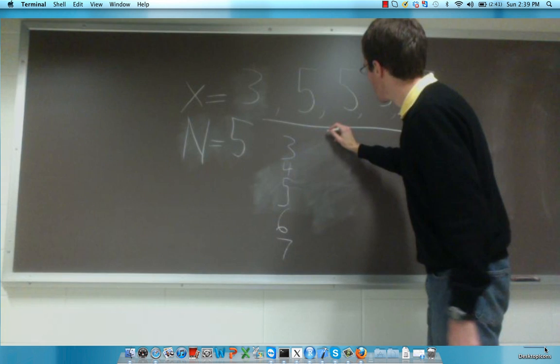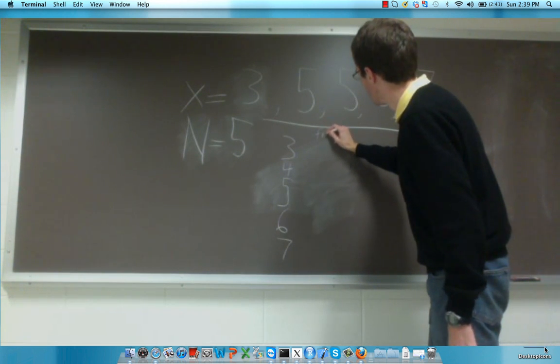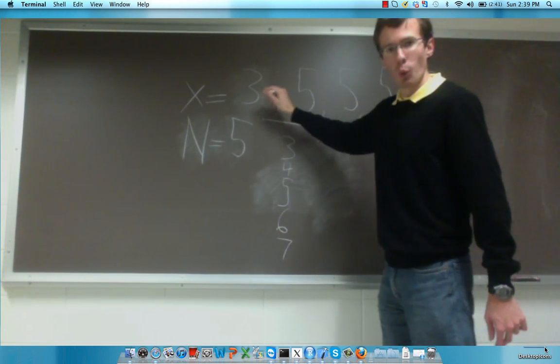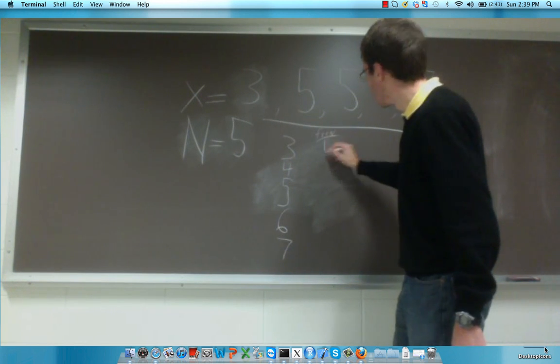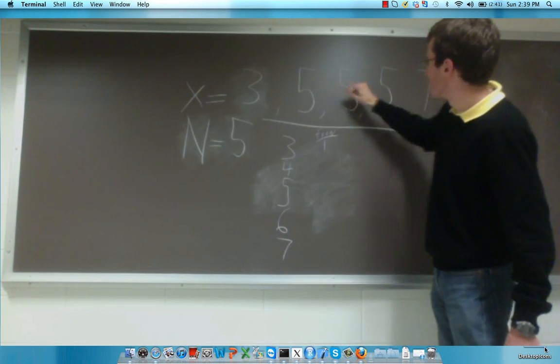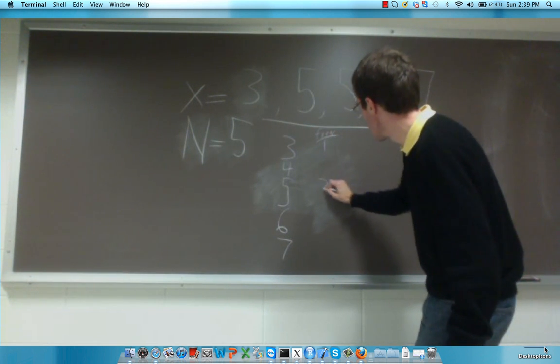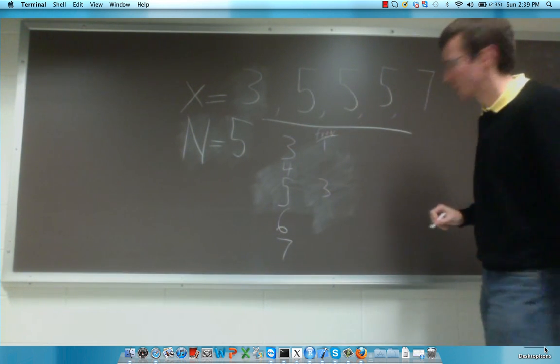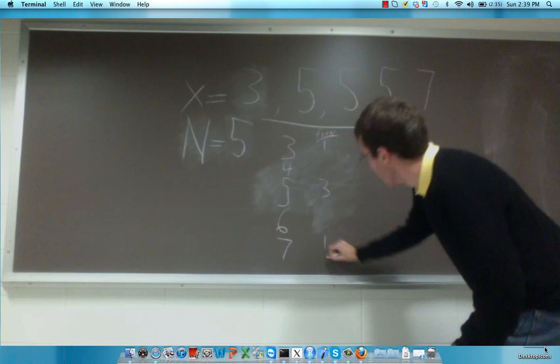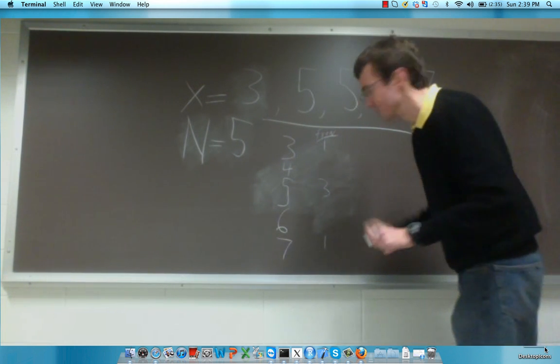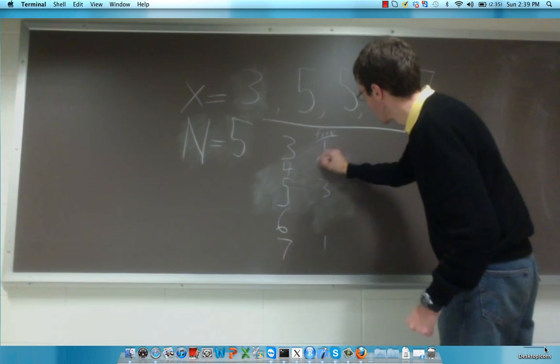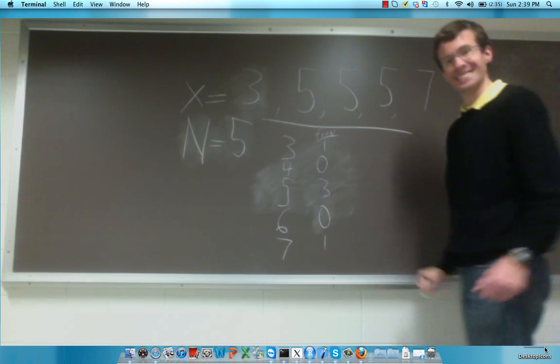Our frequency goes in the next column. So here we had one occurrence of 3, it's a frequency of 1. We had three occurrences of 5, so that's a frequency of 3. And we had one occurrence of 7, so that is a frequency of 1. There were no occurrences of 4 or 6, so those frequencies are both 0.